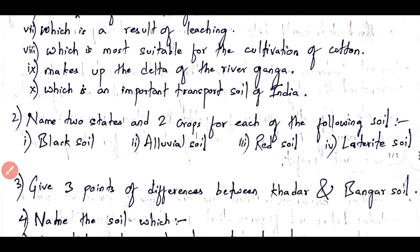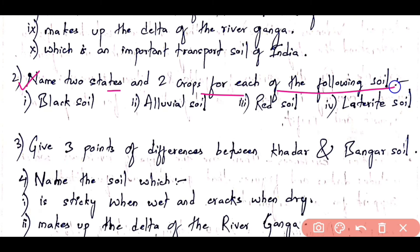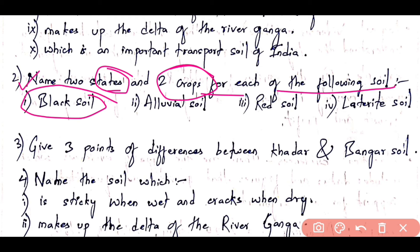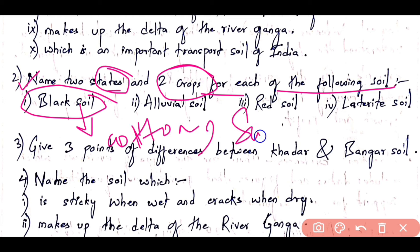Moving to Question 2: Name two states and two crops for each of the following soils. For example, if black soil is given, you have to mention two states where black soil is mostly found and two crops cultivated in it. For black soil, the two crops are cotton and sugarcane, and the two states are Maharashtra and Madhya Pradesh.